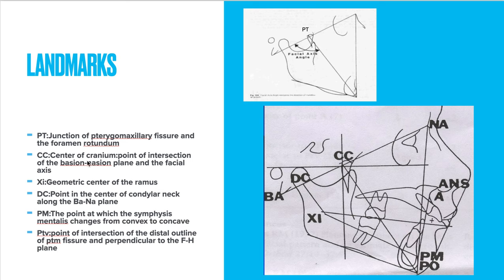The CC point is the center of the cranium. It is the point of intersection of the Basion-Nasion plane and the facial axis. The facial axis runs from the PT point to Gnathion. The intersection of that line with the Basion-Nasion plane is the CC point.